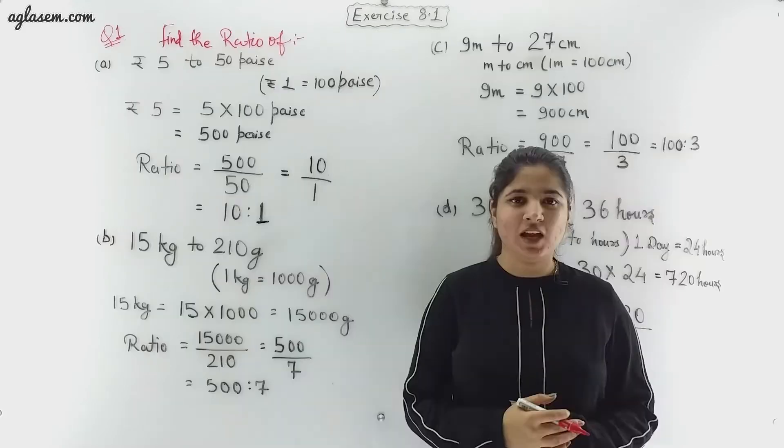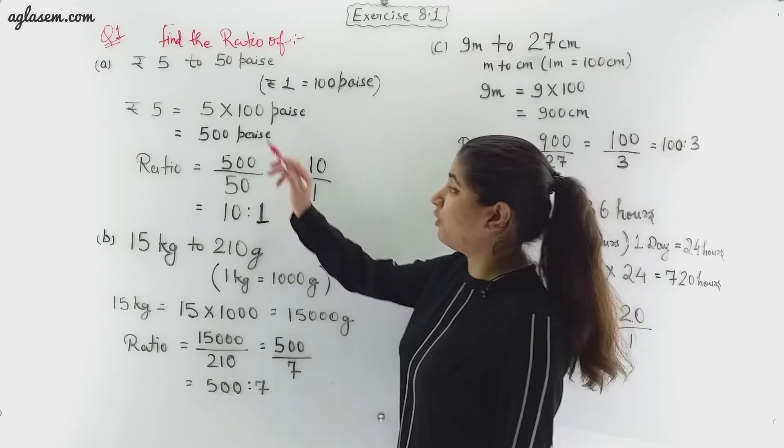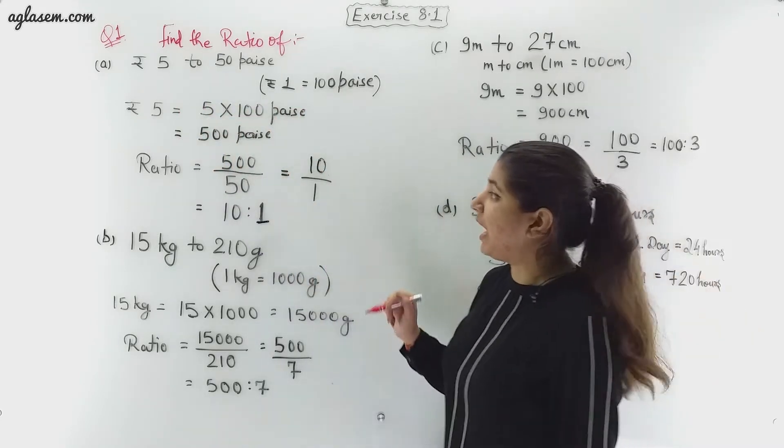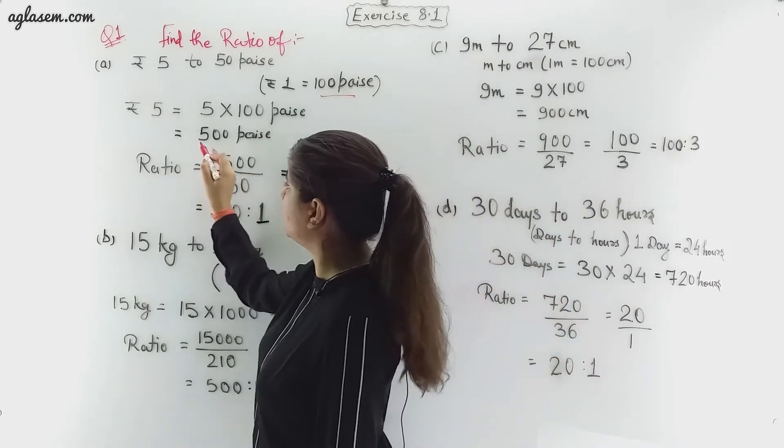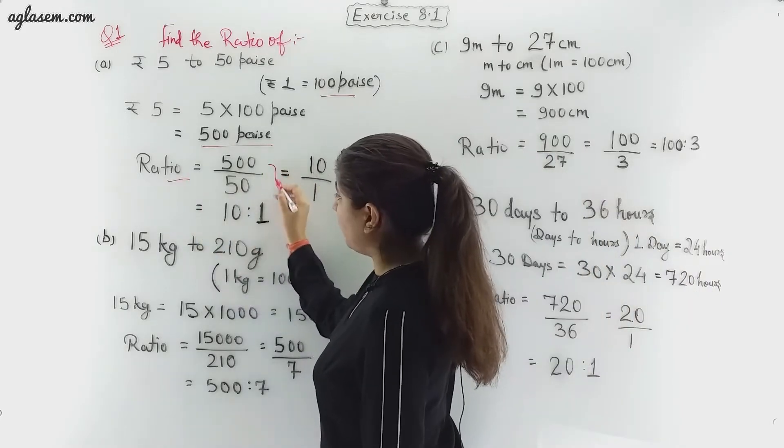Let's begin with the very first question. Here we have to find the ratio of 5 rupees to 50 paisa. So here we have to do the conversion. As we know that 1 rupee equals 100 paisa, so 5 rupees is equal to 500 paisa. Now to find the ratio, we have to divide 500 upon 50. We get 10 ratio 1.